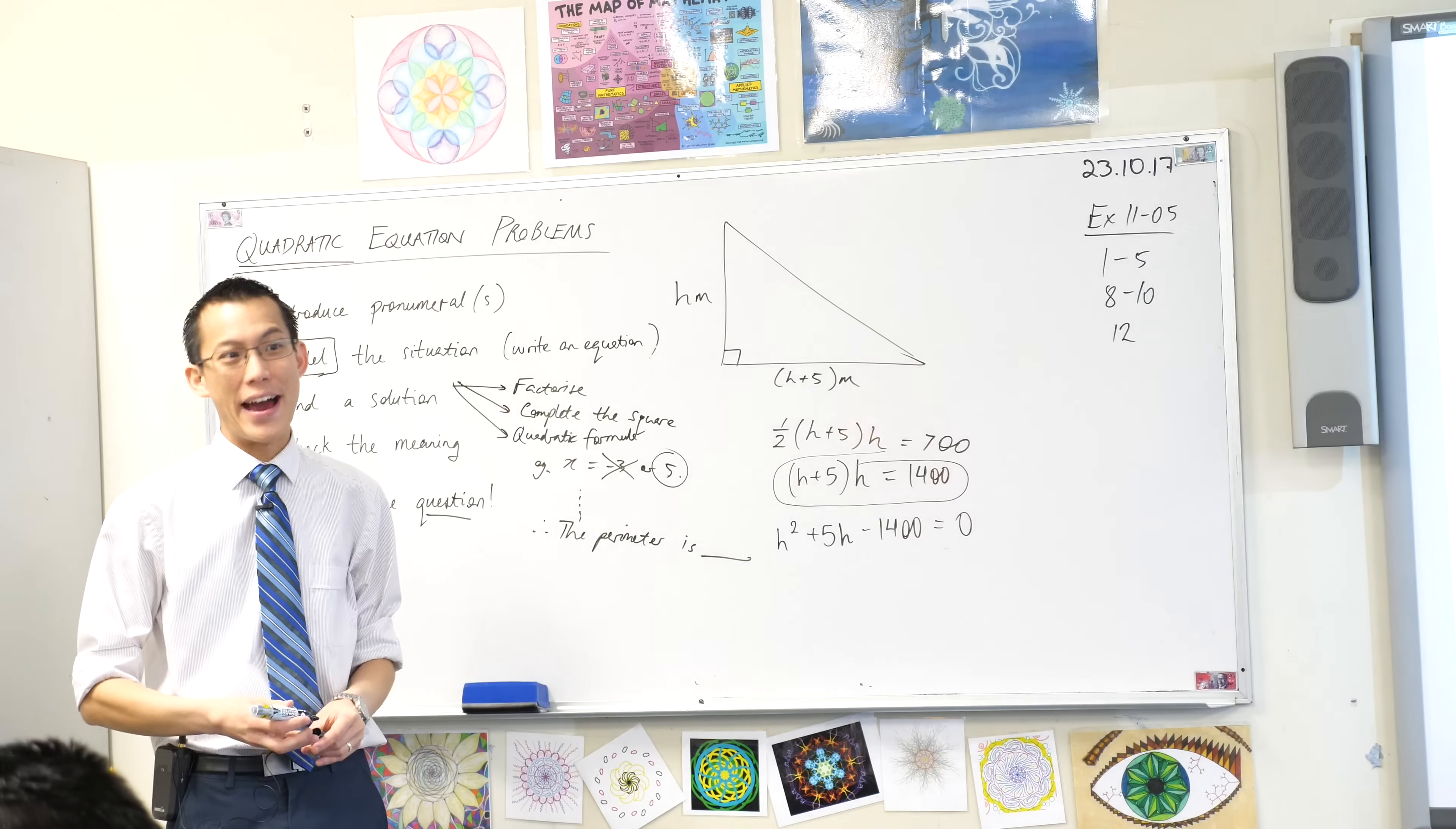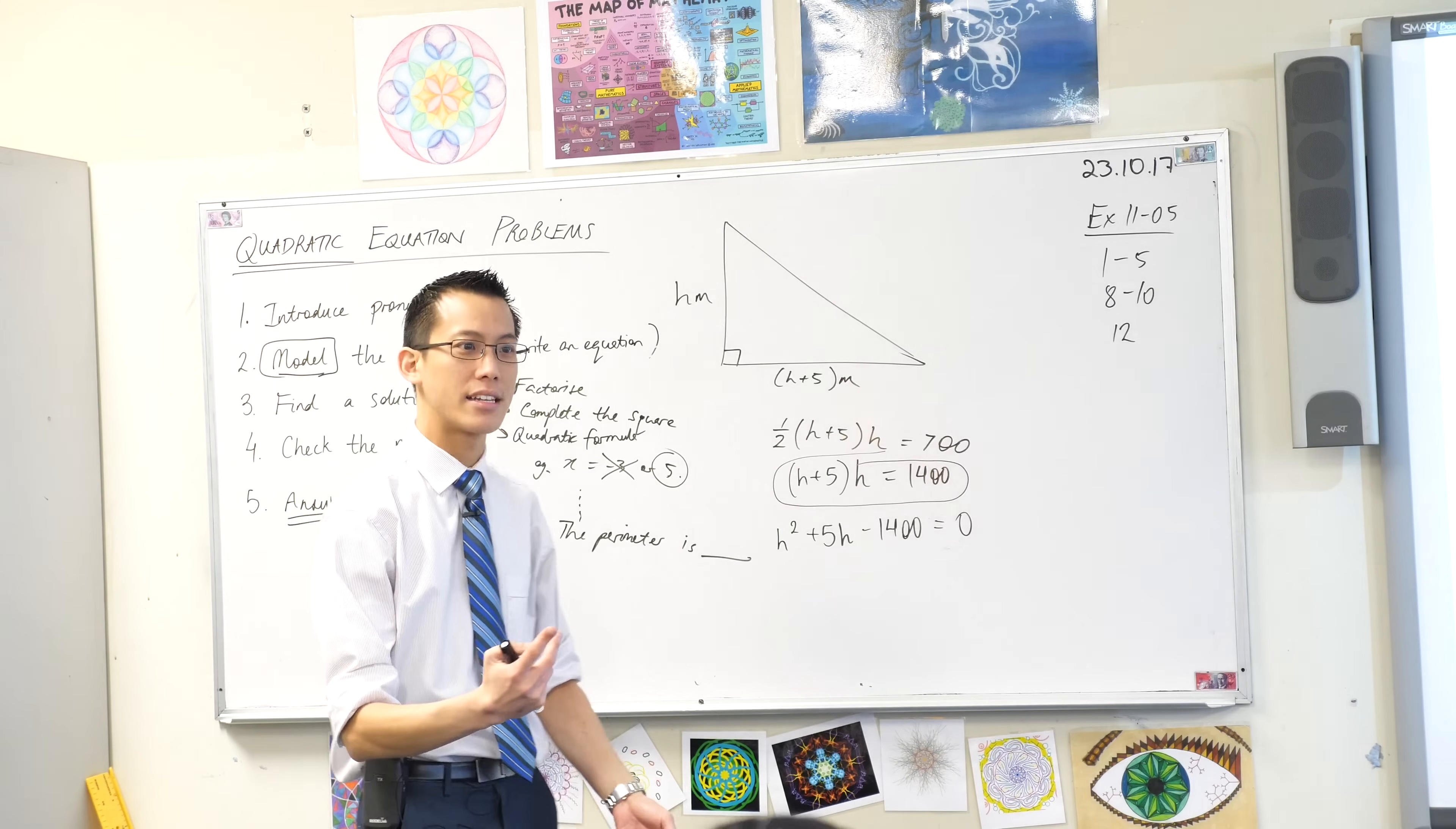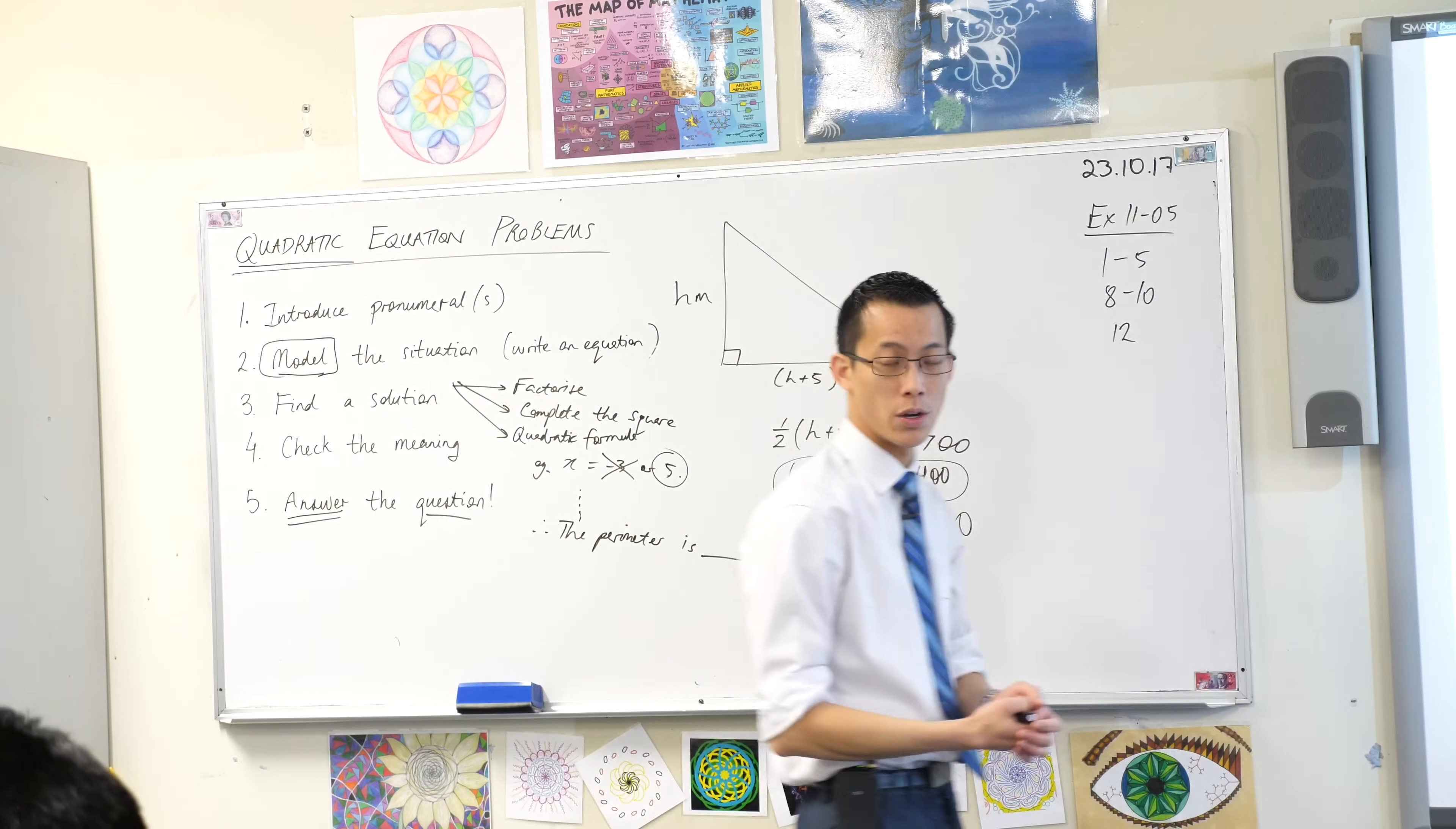Now, 1400. I don't know the factors of 1400. So if there's no shame in it, grab your calculator out and try and divide by some things. We're looking for a pair of numbers that multiplies to negative 1400. It's negative. Watch out for that. And adds to five. So one's going to be negative, one's going to be positive. What do you got?